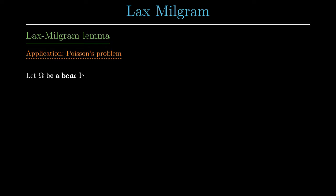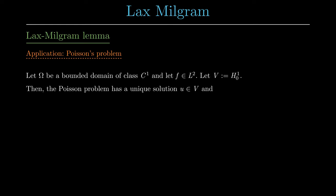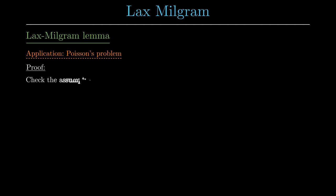Now we continue with what we initially wanted to show. That the Poisson problem has a unique solution and that we get a stability estimate, which is an upper bound for the H¹ norm of our solution u. In the proof, we will now verify all assumptions of the Lax-Milgram lemma.